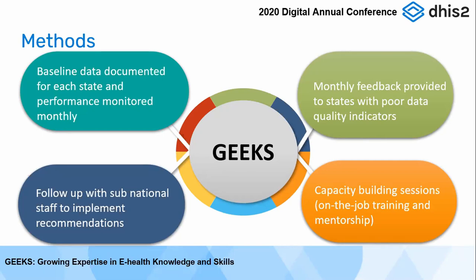These were some of the strategies we used. We started by identifying the baseline, and first had to decide what indicators we'd track for data quality — we restricted ourselves to completeness and accuracy. Under accuracy, we defined specific indicators for routine immunization. We documented baseline in February 2019 based on data on DHIS2 for all 36 states in Nigeria including the Federal Capital Territory. Over a period of months, monthly and weekly, we monitored those indicators and tracked progress.